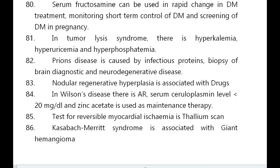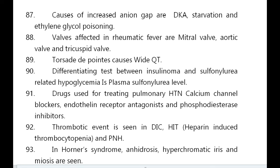Kasabach-Merritt syndrome is associated with giant hemangioma. Causes of increased anion gap include DKA, starvation, and ethylene glycol poisoning. Valves affected in rheumatic fever are mitral valve, aortic valve, and tricuspid valve.